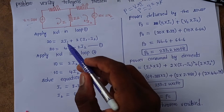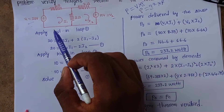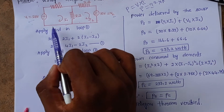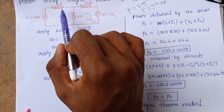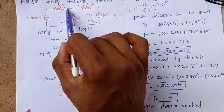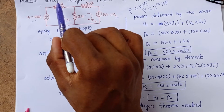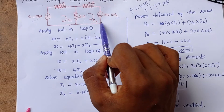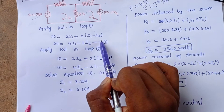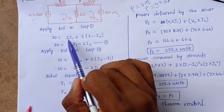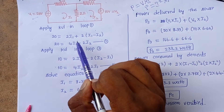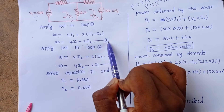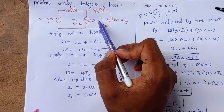Applying KVL in loop one: voltage rise at voltage source is 20 V equals voltage drops at the resistances. The voltage drop across the first resistor is 2I1, and across the shared resistor is 2(I1 − I2). This gives: 20 = 2I1 + 2(I1 − I2), simplifying to 4I1 − 2I2 = 20. This is equation one.